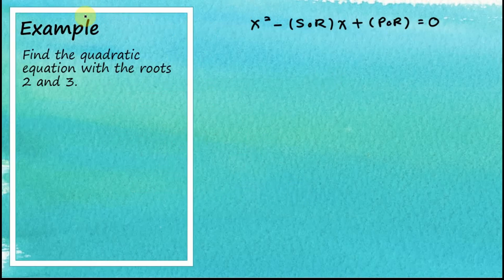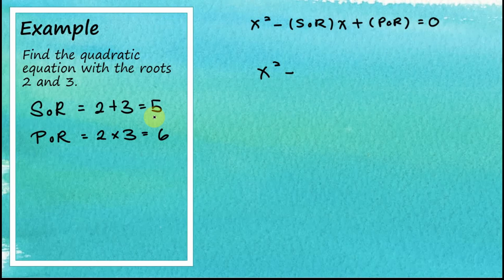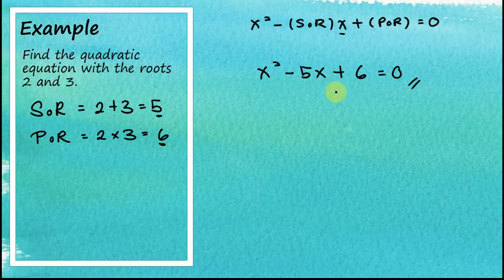Going back to the example: given roots two and three, the sum of roots = 2 + 3 = 5 and the product of roots = 2 × 3 = 6. Therefore the quadratic equation is x² - 5x + 6 = 0. If we remember this formula, we can form a quadratic equation from its roots much more easily. Let's look at a few more examples.